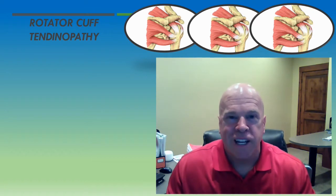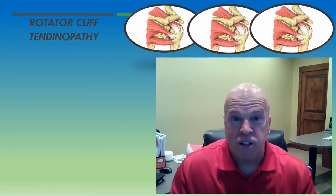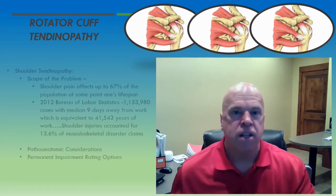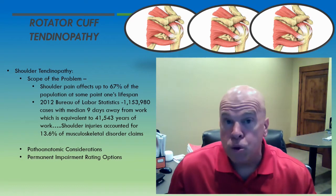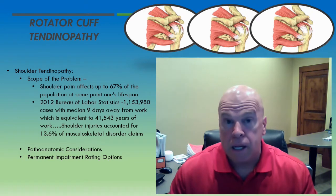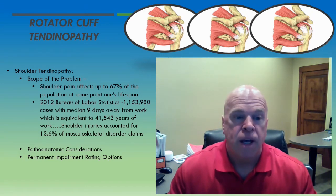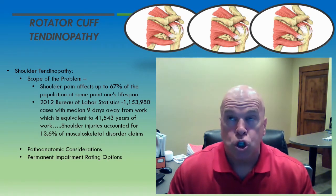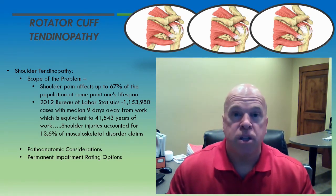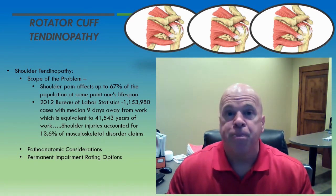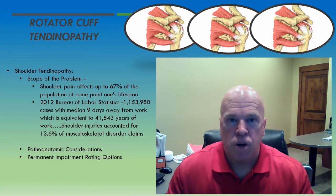Now we're in session number three, talking about rotator cuff tendinopathy. We have at least three considerations in this discussion. In session number one, we talked about the scope of the shoulder pain problem, both within the general population and within the industrial setting, with regards to injured workers seen face-to-face in the QME evaluation.